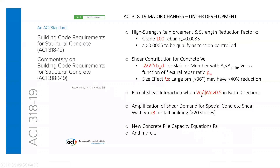The next change is that ACI now requires you to consider biaxial shear interaction when your demand-to-capacity ratio (DCR or UC) is greater than 0.5 in both directions. Previously, you could consider shear design in the X and Z directions separately with no interaction. But in the new code, interaction must be considered when the UC exceeds 0.5 in both directions simultaneously.